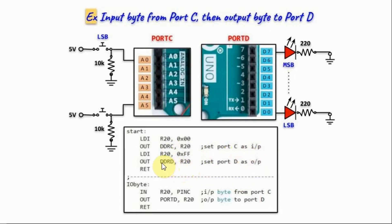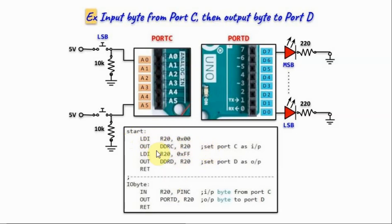We send the byte FF to the data direction register of port D to set port D as output. We then input the byte from port C using the pin C register and copy it into R20 using the IN instruction. Using the OUT instruction, we send the byte to register port D to be displayed on the eight LEDs. Note that function start, located in the S file of the Arduino IDE, is called once by the setup function inside the INO file, while function IO_byte is called repeatedly within the loop function of the INO file.